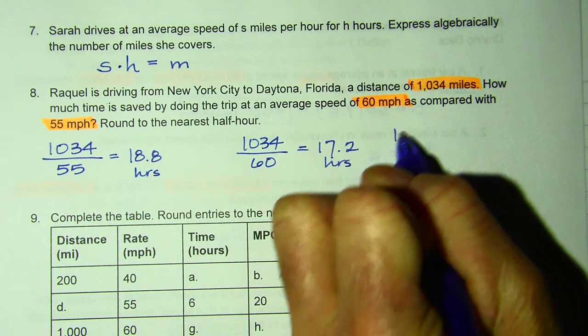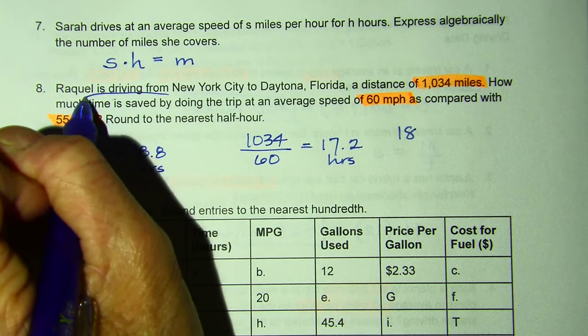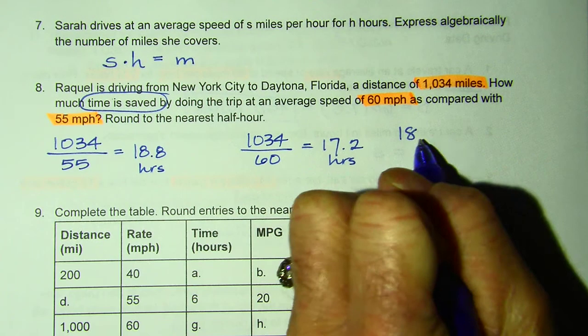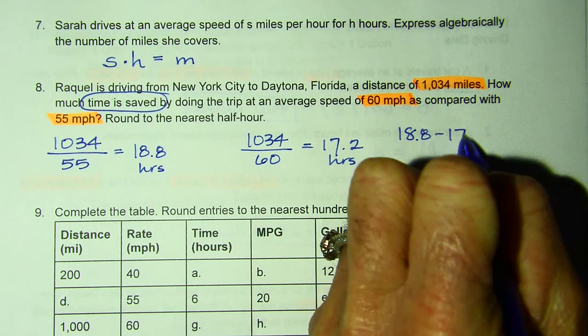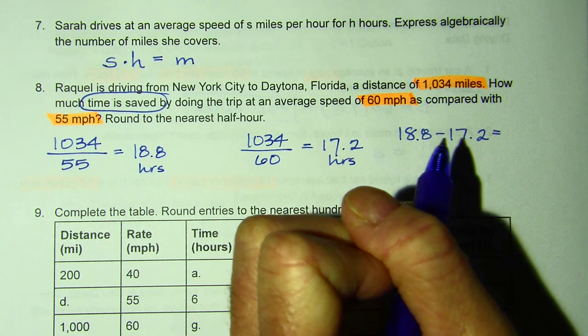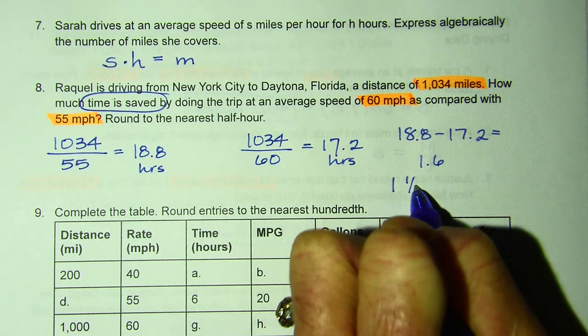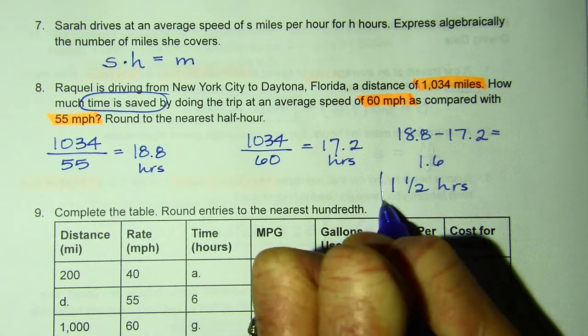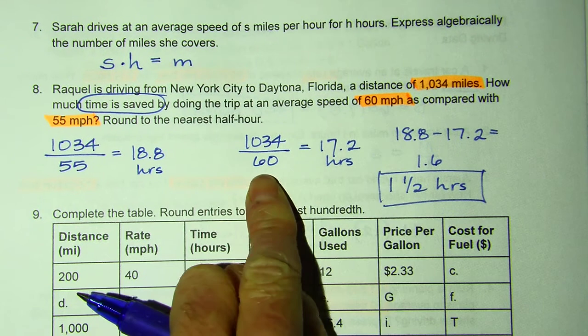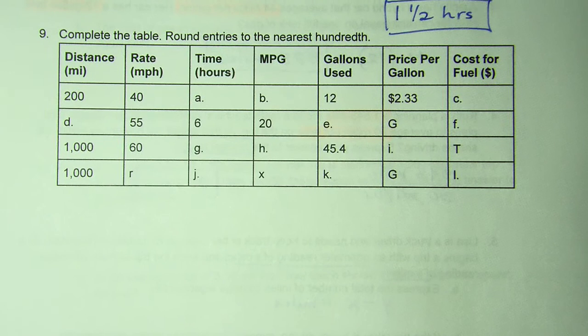If I subtract, because they wanted to know how much time is saved. So 18.8 minus 17.2, and I get 1.6. So I would say about one and a half hours if I drove five miles per hour faster.